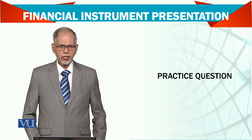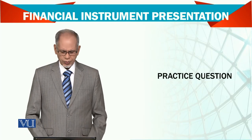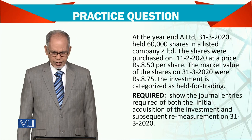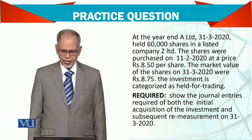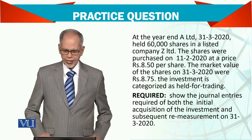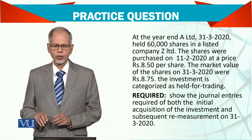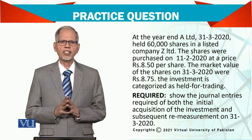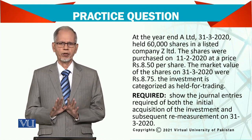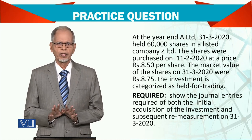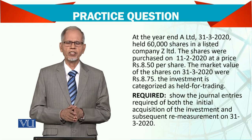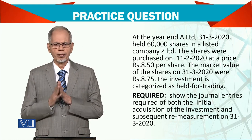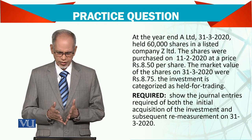We have to look into another question. At the year end — A Limited's year end is 31st March 2020. These year ends are reporting periods, reporting dates. It can be 30th June, 30th September, or 31st December.